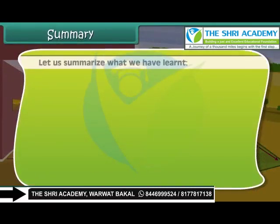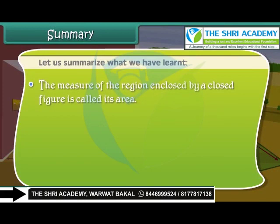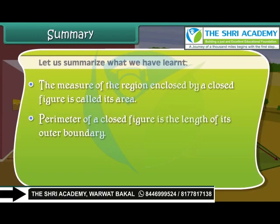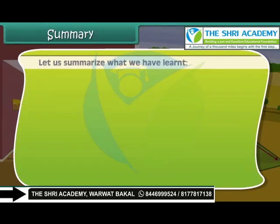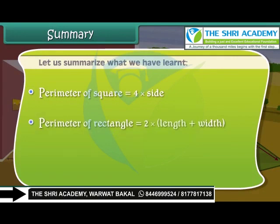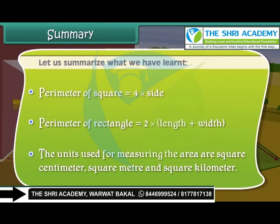Let us summarize what we have learned. The measure of the region enclosed by a closed figure is called its area. Perimeter of a closed figure is the length of its outer boundary. Area of a square is equal to side × side. Area of a rectangle is equal to length × width. Perimeter of a square is equal to 4 × side. Perimeter of a rectangle is equal to 2 × (length + width).